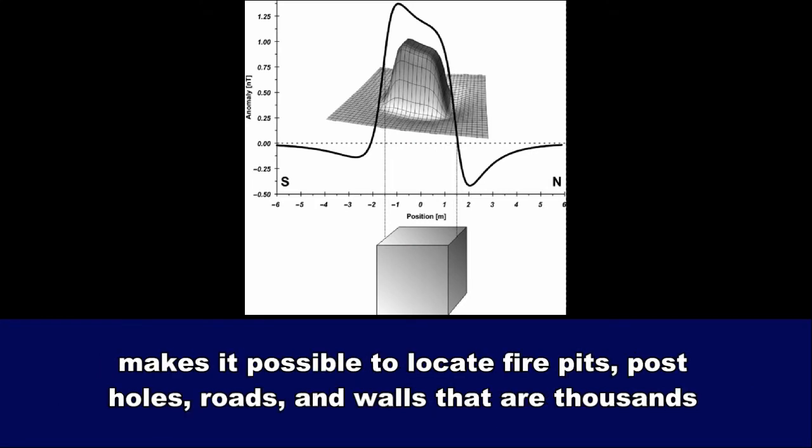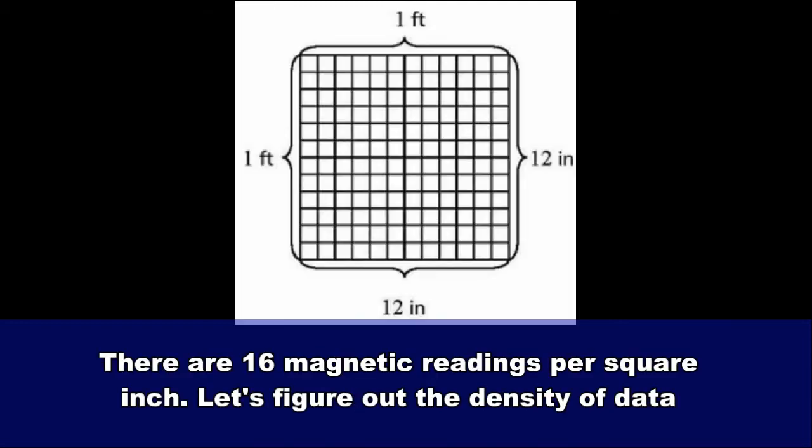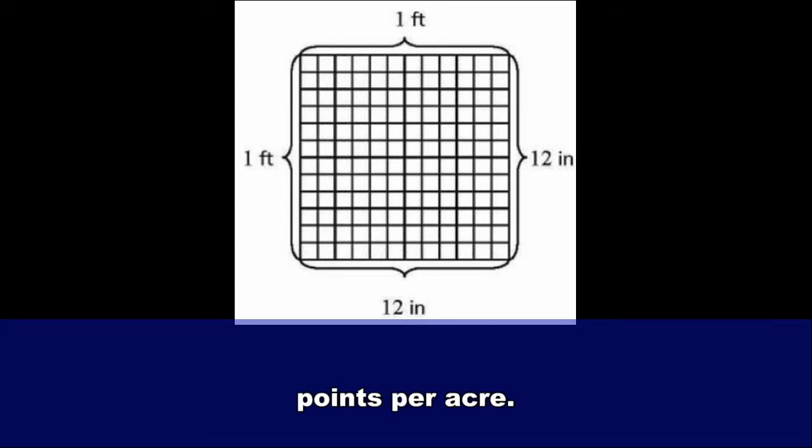This fineness of measurement makes it possible to locate fire pits, post holes, roads, and walls that are thousands of years old. There are 16 magnetic readings per inch. Let's figure out the density of data points per acre.